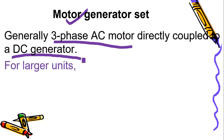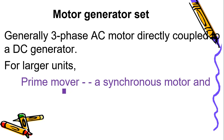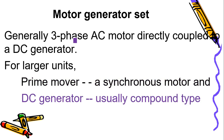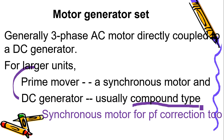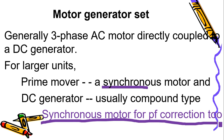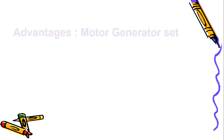For bigger or larger units, the prime mover is generally a synchronous motor instead of an AC induction motor, and the DC generator for larger units will be of compound type. In that condition, this can also be used for power factor correction.